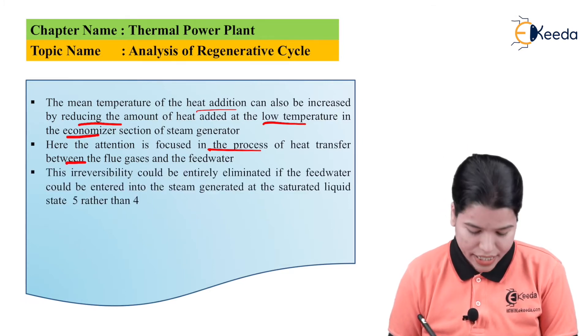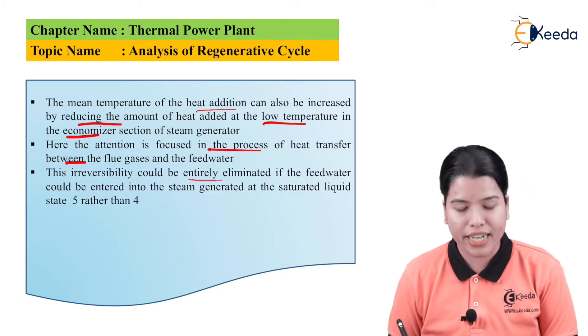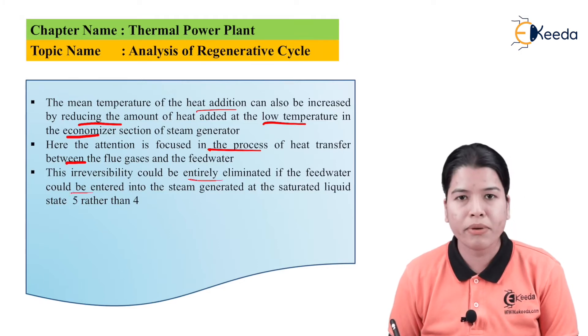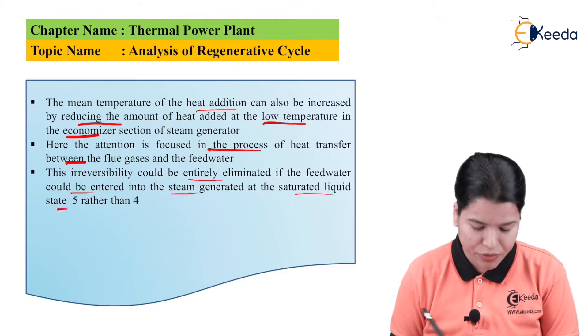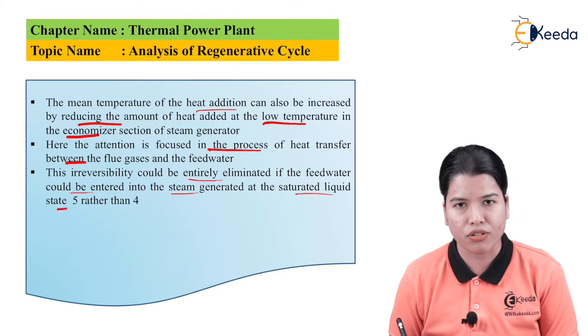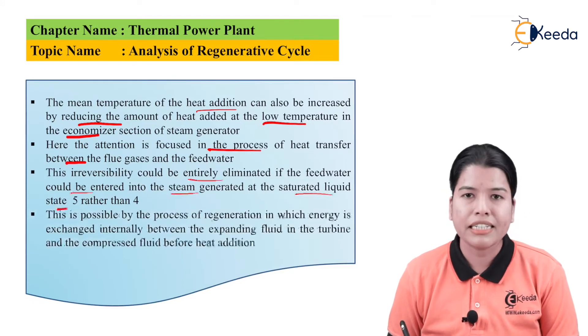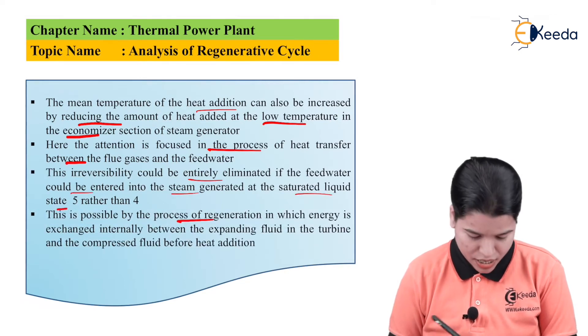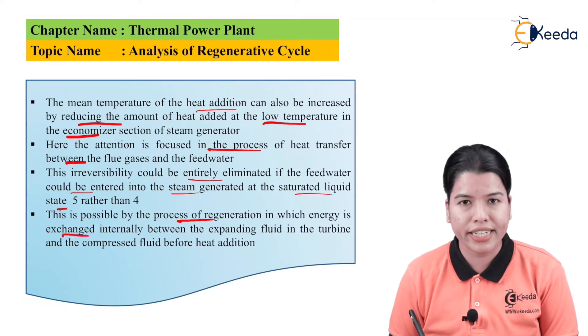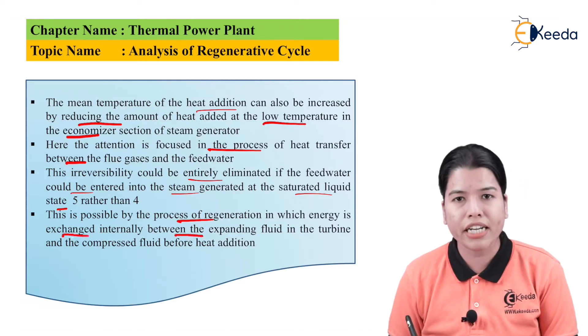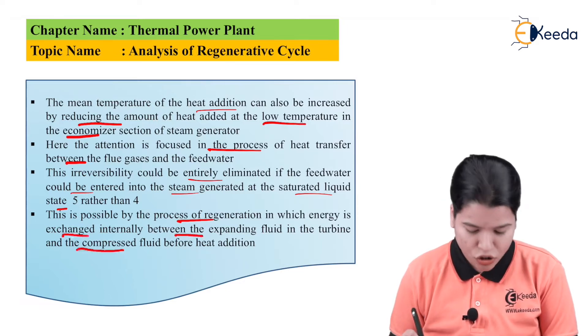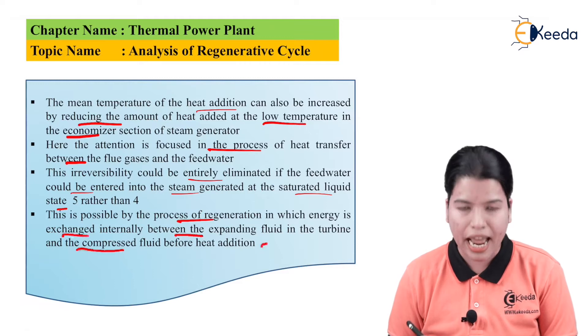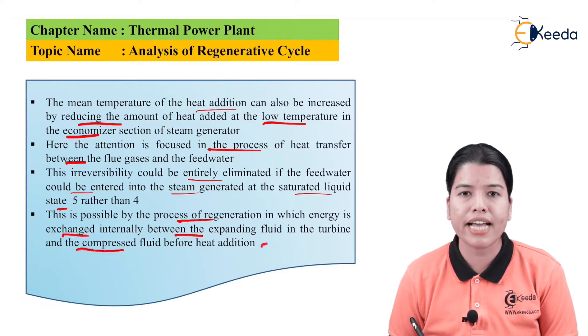This irreversibility could be entirely eliminated if the feedwater could be entered into the steam generator at a saturated liquid state 5 rather than 4. This is possible by the process of regeneration, in which energy is exchanged internally between the expanding fluid in the turbine and the compressed fluid before the heat addition. This process is called regeneration.